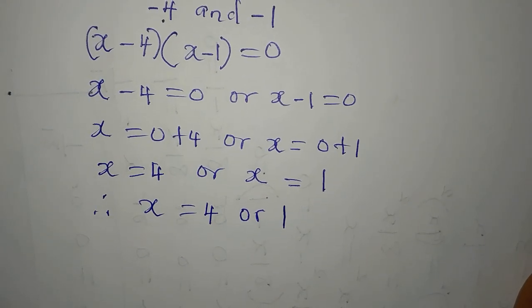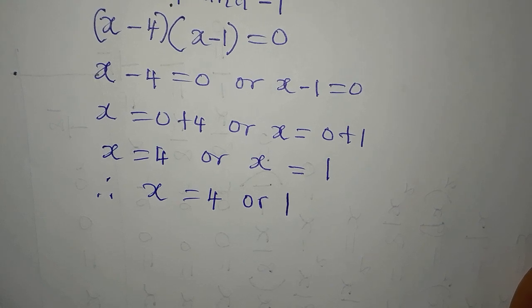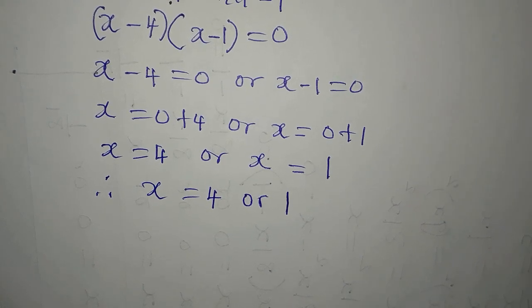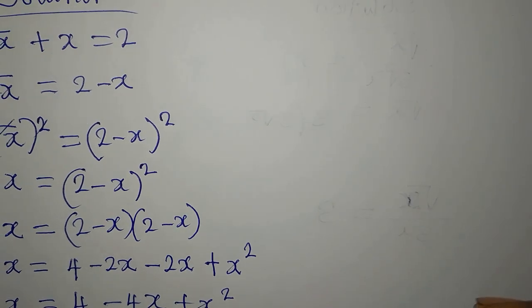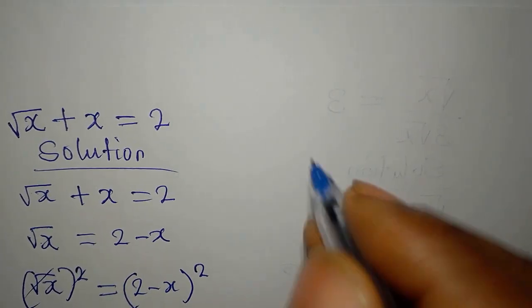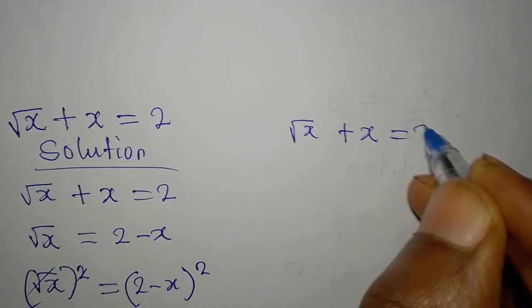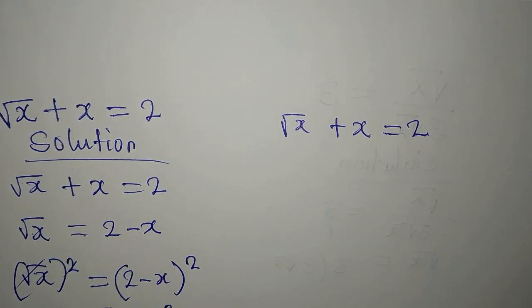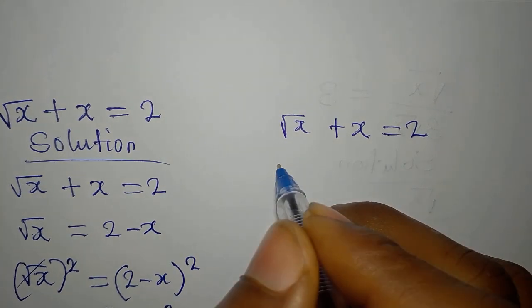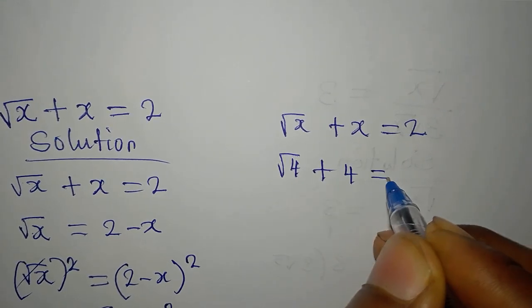But mind you, do we think that both of them will be satisfying the equation? Let's go back to the equation and we substitute. The equation is square root of x plus x equals 2. Definitely, if you put the first value of x, then we have square root of 4 plus 4 equals 2.